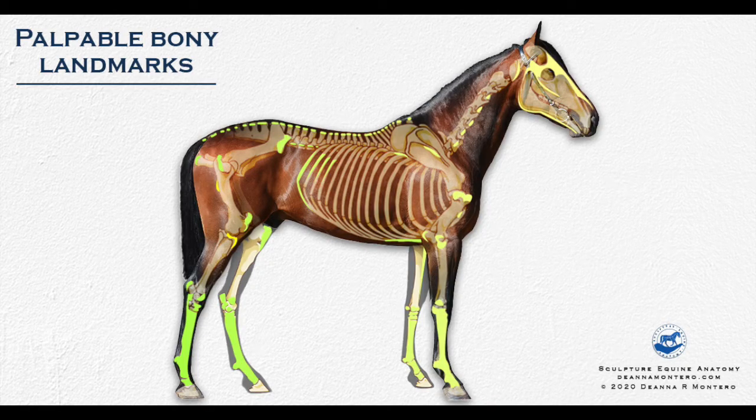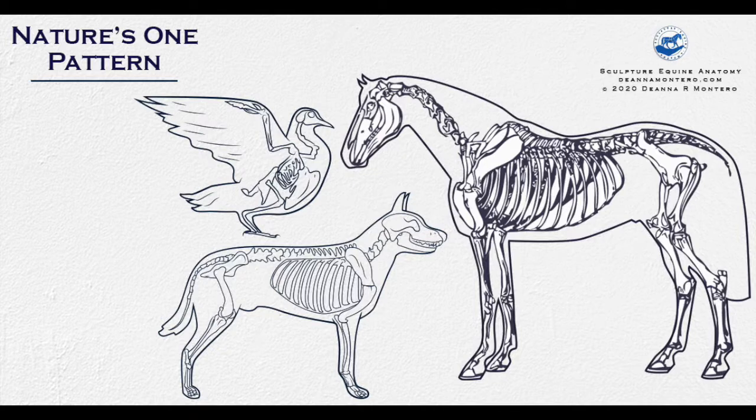With this understanding, we can pinpoint some discomforts or even lameness that might be occurring within an animal. Once we've studied the bony landmarks, we then move on to studying the full skeleton. This gives us the ability to identify patterns within the body — different bones and how those bones fit together, and also the patterns between species. For instance, how all vertebrates have a similar skeleton. Nature has one pattern, and that gives us a really great guide to sculpting and understanding these different creatures.